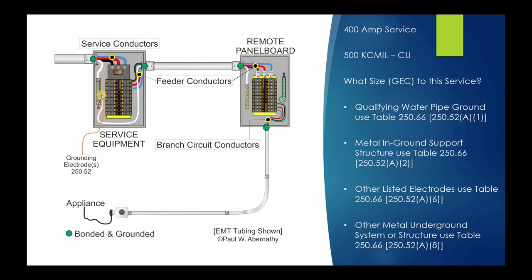In this case we need to size the grounding electrode conductor for a 400 amp service that's being supplied by 500 kcmil copper. Over here on the right you see four different types of grounding electrodes. The one thing they all have in common is that all of these types utilize Table 250.66. Since they all use Table 250.66 and we're talking about the same 500 kcmil, they're all going to result in the same size grounding electrode conductor. To save time, let's just do the water pipe ground, because the same process applies to all of these.